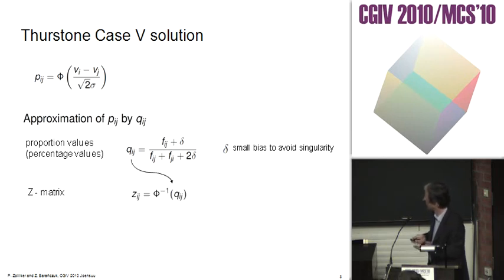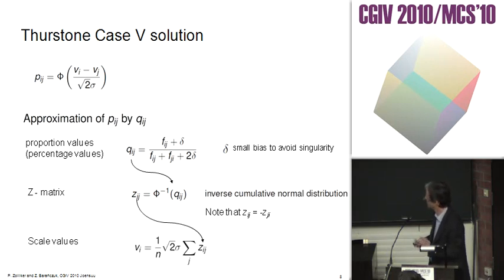Then we arrive at a set matrix using the inverse cumulative normal distribution. It's interesting to note that this matrix is anti-symmetric. Finally, we add up the rows of the matrix and scale it correctly.